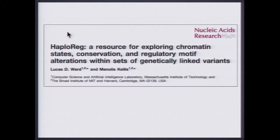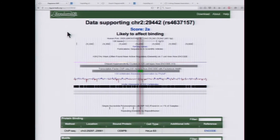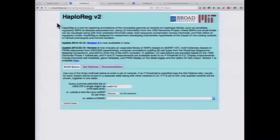We also have a tool called HaploReg, from Manolis Kellis' lab. What's nice about these tools is they have similar features, but you can use them together to get a really nice view of what your variants are possibly doing. For HaploReg, the address is through the Broad Institute — I find the easiest way to get there is to actually Google HaploReg, since the address is a little long.